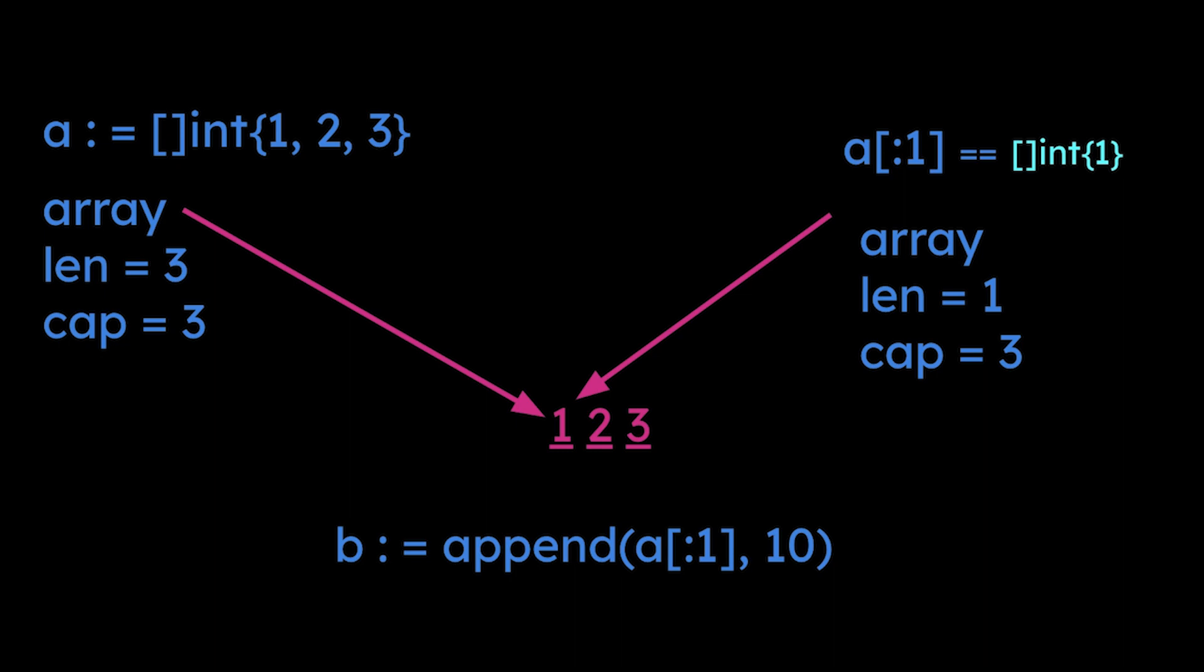It's pointing to the same position as A because they're pointing to that same value. The sub-slice has a length of one and a capacity of three, because it's still got three remaining spots in that array that it can work with. Now, here comes the second misconception.